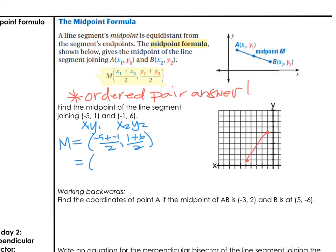-5 plus -1 would be -6 over 2. 1 plus 6 is 7 over 2. If you can reduce the fraction, please do so. Always simplify if possible. -6 over 2 would be -3. 7 over 2 doesn't simplify, so you can leave it as an improper fraction or write it as a mixed number, 3 and a half.